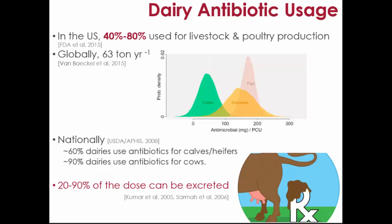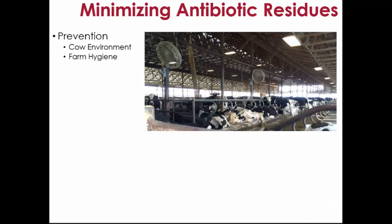We also have a big unknown range about excretion rates — I've seen anywhere from 20 to 90 percent in the literature, and there hasn't been much focused research recently. Ultimately, there are residues that end up in manure. One important way to reduce this is cow environment: better-ventilated buildings, good bedding management, and keeping manure and urine out of buildings can reduce infection incidence, thereby reducing antibiotic usage and residues.